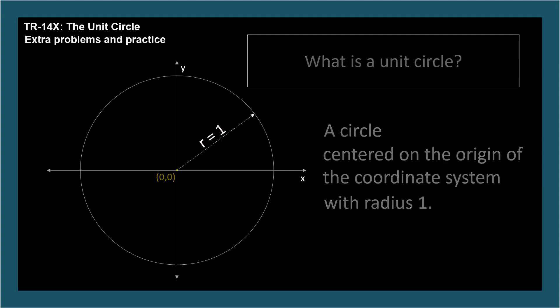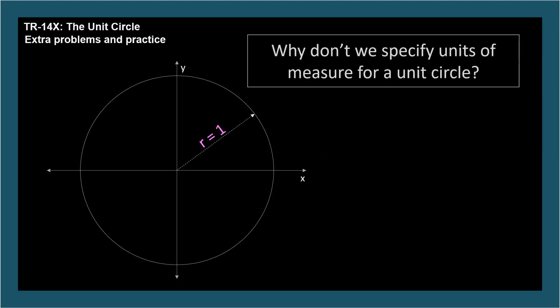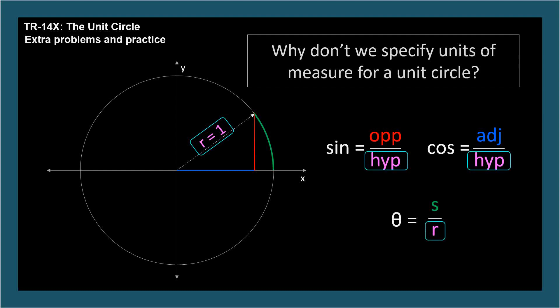Why don't we specify units of measure for a unit circle? For the SOHCAHTOA ratios and the arc length formulas, the unit of measure of the radius will always cancel out with some other length, so we draw the unit circle with no units at all.